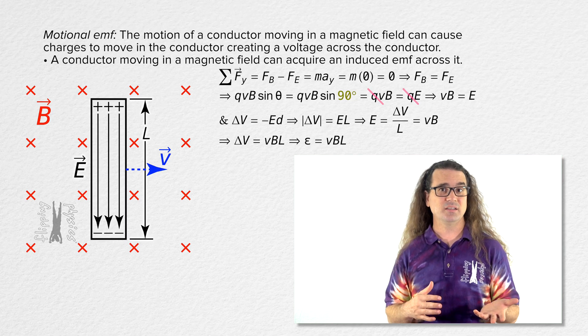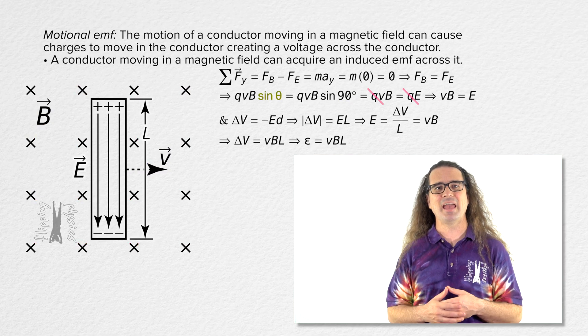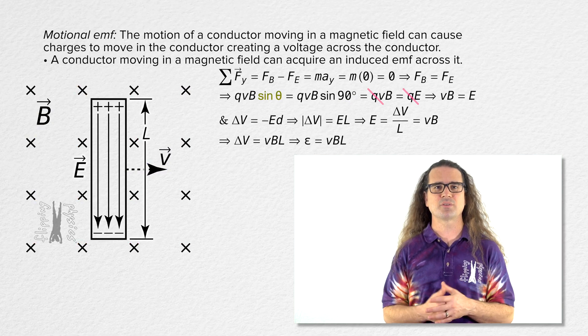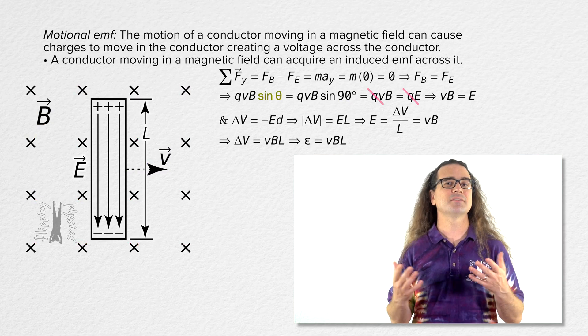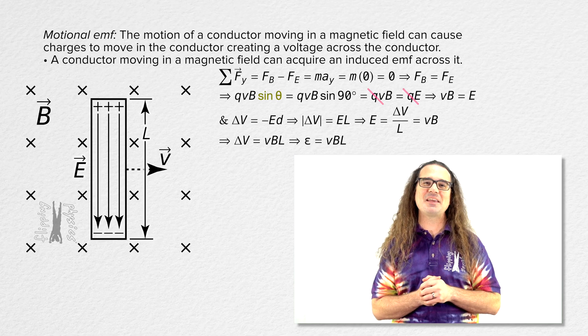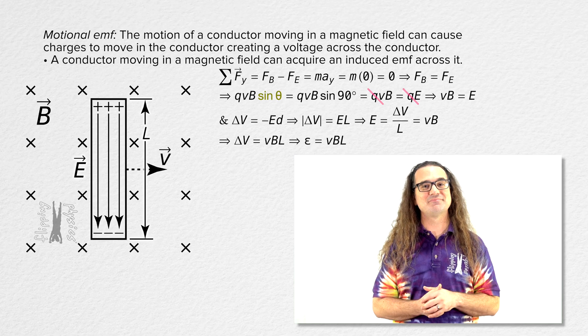If the conductor is not moving at 90 degrees to the field, you would leave the sine of the angle in the equation. That is an important thing to realize. Thank you very much for learning with me today — I enjoy learning with you.